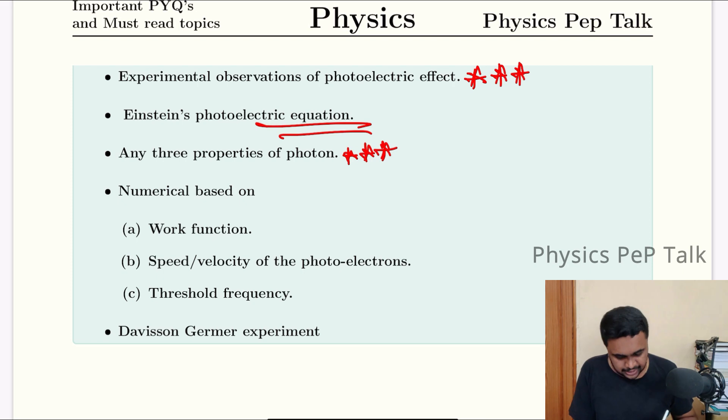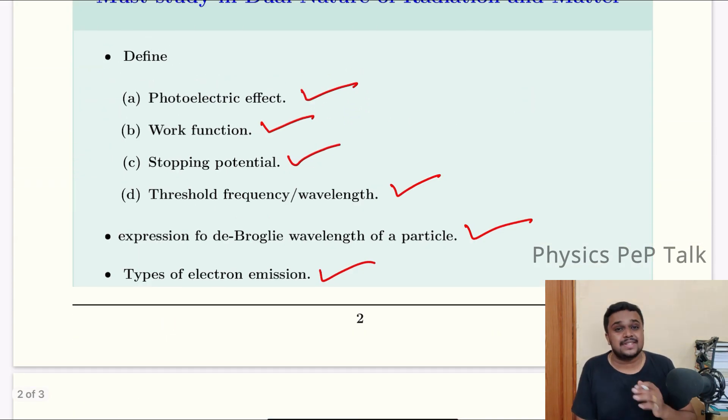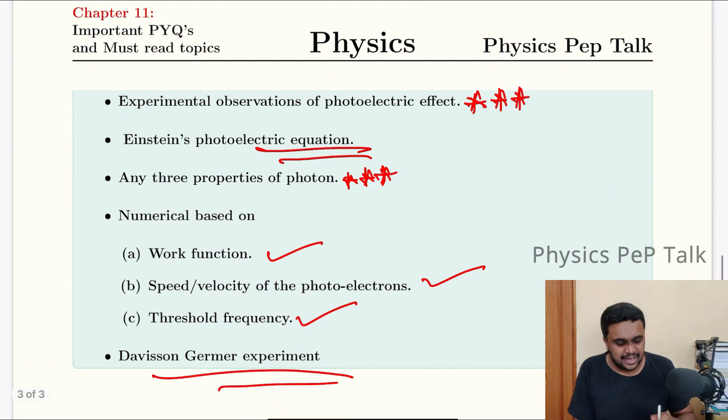Numerical based on work function, speed, velocity, threshold frequency. Davisson and Germer experiment - this is very important work. I can say 100 out of 100, this can be asked. All these experiments have been concentrated between all the important topics.